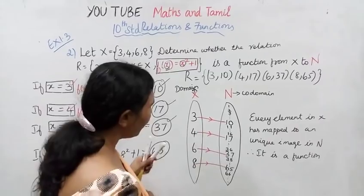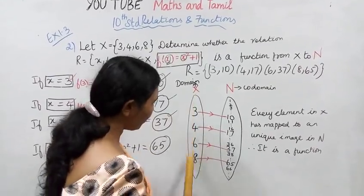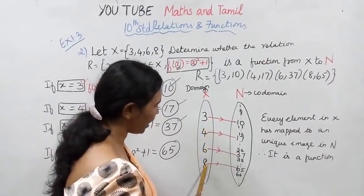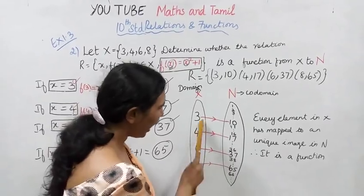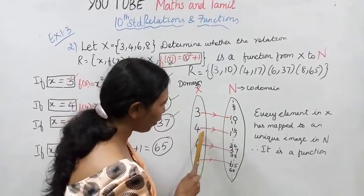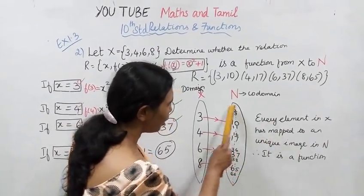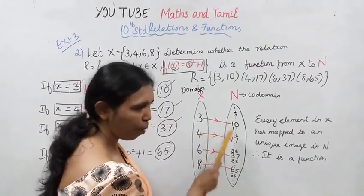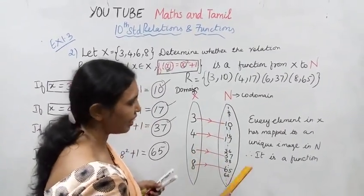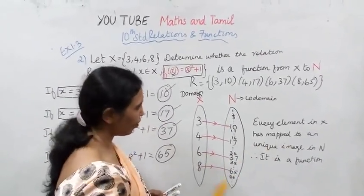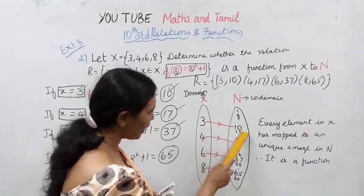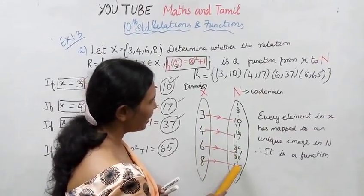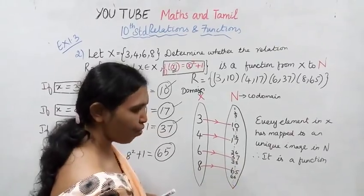Every element in X — that is, 3, 4, 6, 8 — has a unique image in N. The pairs are (3,10), (4,17), (6,37), (8,65). Therefore, this relation is a function from X to N.